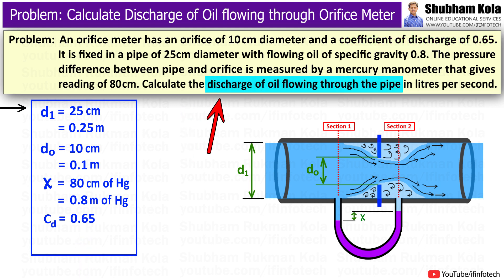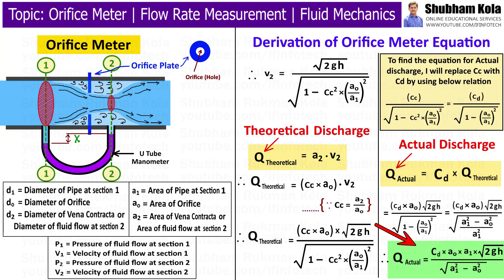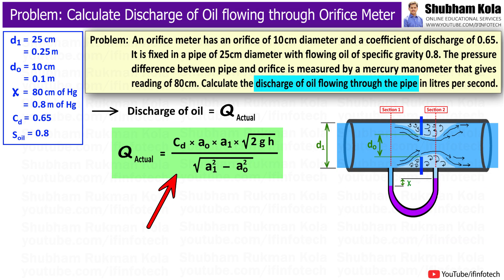In this problem, we want to find out the discharge of oil flowing through the pipe whose specific gravity is 0.8. To calculate discharge of oil, I will use the formula that we had derived in the previous video. By using that formula, we will calculate actual discharge of a fluid flowing through orifice meter.